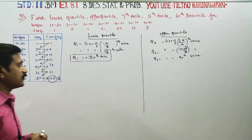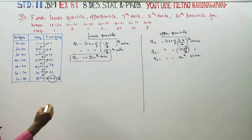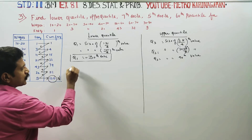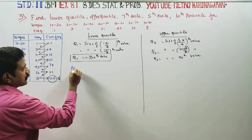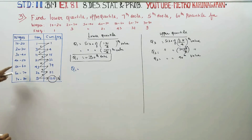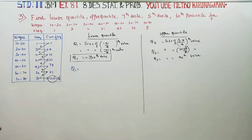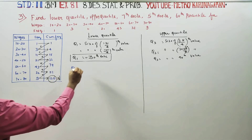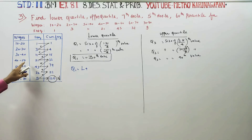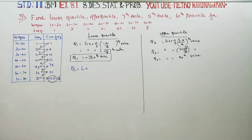What is the formula? Q1 is equal to — for grouped data — L plus N by 4 minus previous cumulative frequency, divided by frequency, into class interval. That is the lower interval formula.